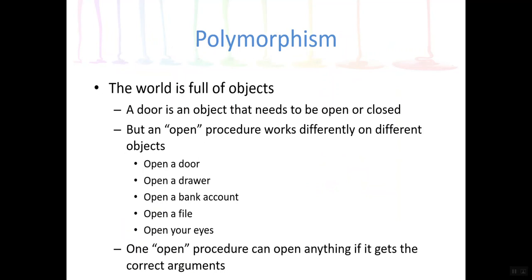Polymorphism. So basically our author would like us to call attention to the fact that the world is full of objects, right? So you know, a door is an object that can be opened or closed. But if you think of the word open and the steps involved, and what open means to different objects, opening a door, opening a drawer, opening your eyes, for example, all really have different meanings because, well, opening your eyes is clearly a different action than opening a file. So an open procedure can open anything if it gets the correct arguments.